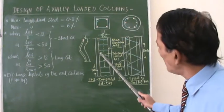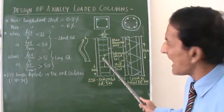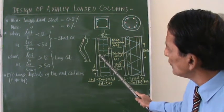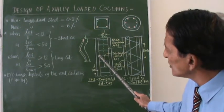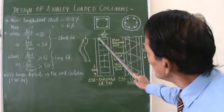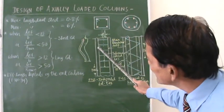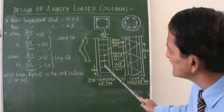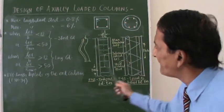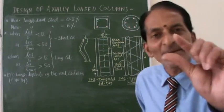The function of these lateral ties is they do not allow the longitudinal steel to buckle. For example, if I keep this longitudinal steel without these lateral ties, the longitudinal steel may buckle very easily because it is very thin.